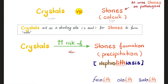Crystals versus stones: stones are the same as calculi. Crystals are smaller; calculi or stones are larger. Crystals act as a starting site — a seed for stone formation. The more crystals you have, the greater the risk of stone formation and precipitation, which is called urinary stones, kidney stones, or nephrolithiasis. The suffix '-iasis' means condition; 'lith' means stone — as in fecalith, otolith, sialolith, or nephrolith depending on whether it's in the stool, ear, salivary glands, or kidney.